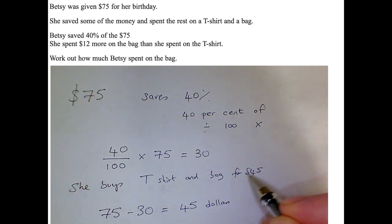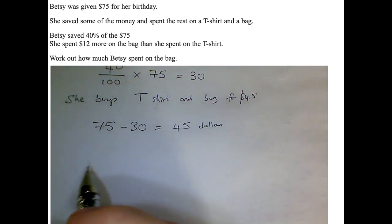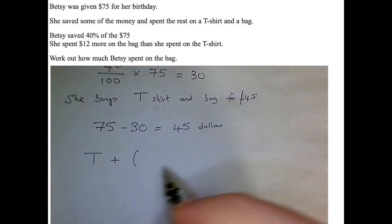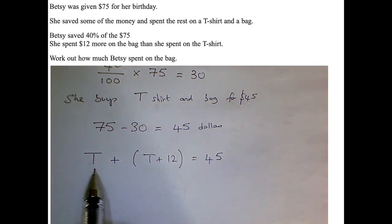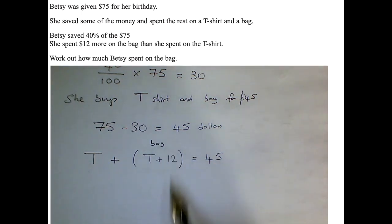And we really need to come up with an equation now, so we can work out the cost of this bag. So we're not told how much the t-shirt costs, but I can say that that's quite a T for t-shirt, plus something that costs $12 more than a t-shirt, that T plus 12 in brackets is the bag, equals $45. So I'm going to write the bag above that bracket so I know what I'm talking about.